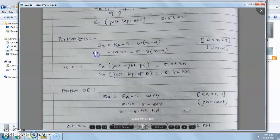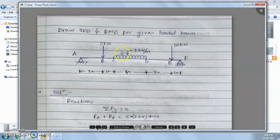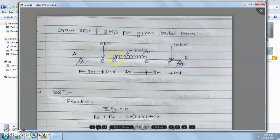Now take the third portion, CD. The shear force for portion CD is the sum of all forces on the left side of that section. RA is positive and 5 kN is negative. Since there is a UDL (uniformly distributed load) on CD, taking section XX at any point on CD means the load due to the UDL varies with position.